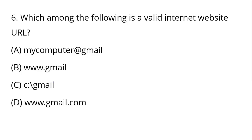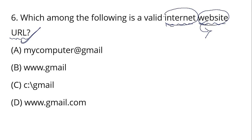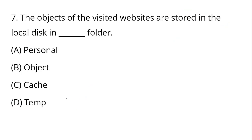Which among the following is a valid internet website URL? URL stands for Uniform Resource Locator — it is the address of a website, which is a collection of web pages. The first web page is called the homepage, and web pages are created using HTML. Internet is called the network of networks. A valid website URL example is www.gmail.com. Objects from visited websites are stored in a local disk folder called cache.